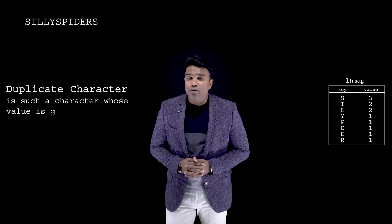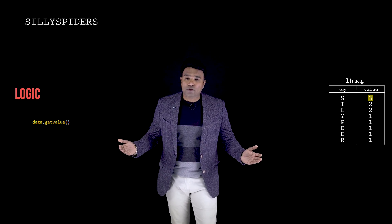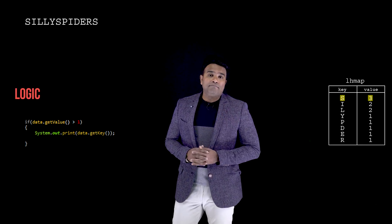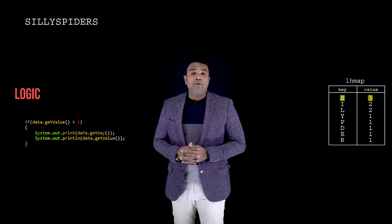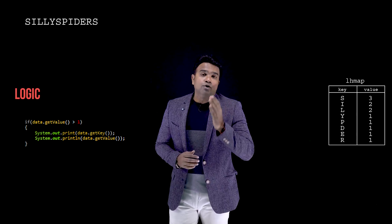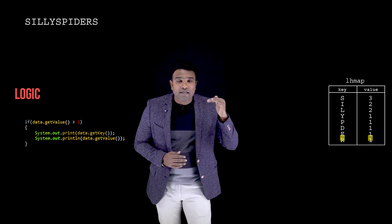A repeated or duplicate character is one whose value in the map is greater than one. The logic is: access the value using data.getValue(), and check if that value happens to be greater than one. If it's greater than one, that respective key is a repeated one, and I will print the key — and optionally the value as well. This condition has to be applied on all the data in the map, so I enclose it within a for-each loop.